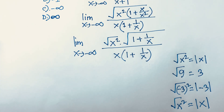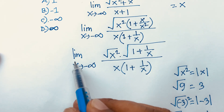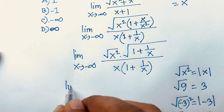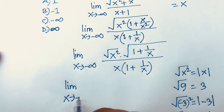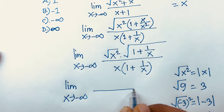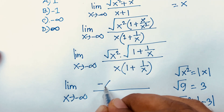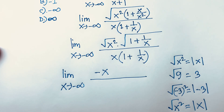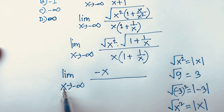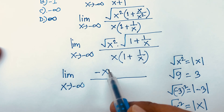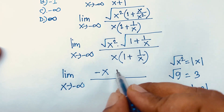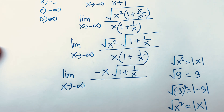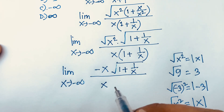Since here x tends to minus infinity, x is negative, so √(x²) = -x. If x were tending to positive infinity, then √(x²) = +x, but since we have x→-∞, √(x²) = -x. So our expression becomes: limit x→-∞ of (-x)·√(1 + 1/x) + x·(1 + 1/x).